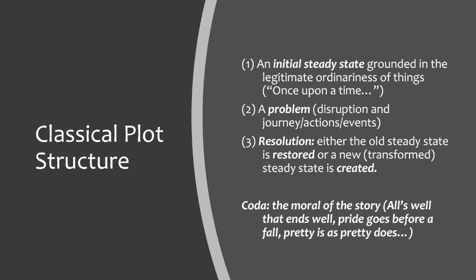I'd like to talk about classical plot structure. It has three central elements: an initial steady state grounded in the legitimate ordinariness of things; then some sort of problem — a disruption, journey, actions, and events; and finally a resolution, where either the old steady state is restored or a new transformed steady state is created. This should sound familiar because that's what most children's books are centered around: once upon a time, then one day, and they lived happily ever after. Most of these stories include some sort of coda or moral, such as 'all's well that ends well,' 'pride goes before a fall,' and 'pretty is as pretty does.'